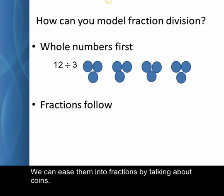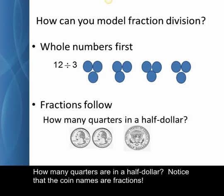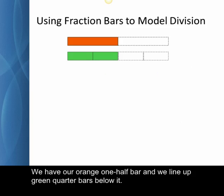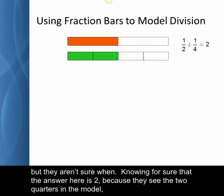We can ease them into fractions by talking about coins. How many quarters are in a half dollar? Notice that the coin names are fractions. So how many quarters are in one-half? Let's see how this looks with fraction bars. We have our orange one-half bar and we line up green quarter bars below it. We see that there are two one-fourths in one-half.